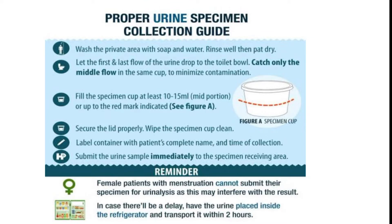Next step: let the first and last flow of urine drop into the toilet bowl and catch only the middle flow. The first portion of urine goes into the toilet. Collect only the midstream — the middle flow of urine — into the specimen container.